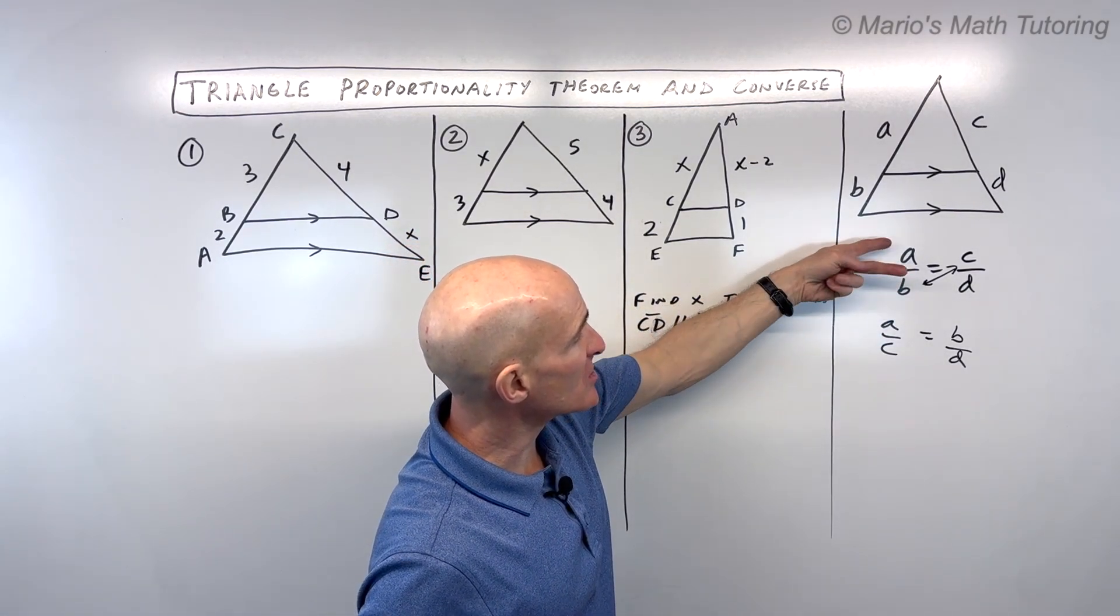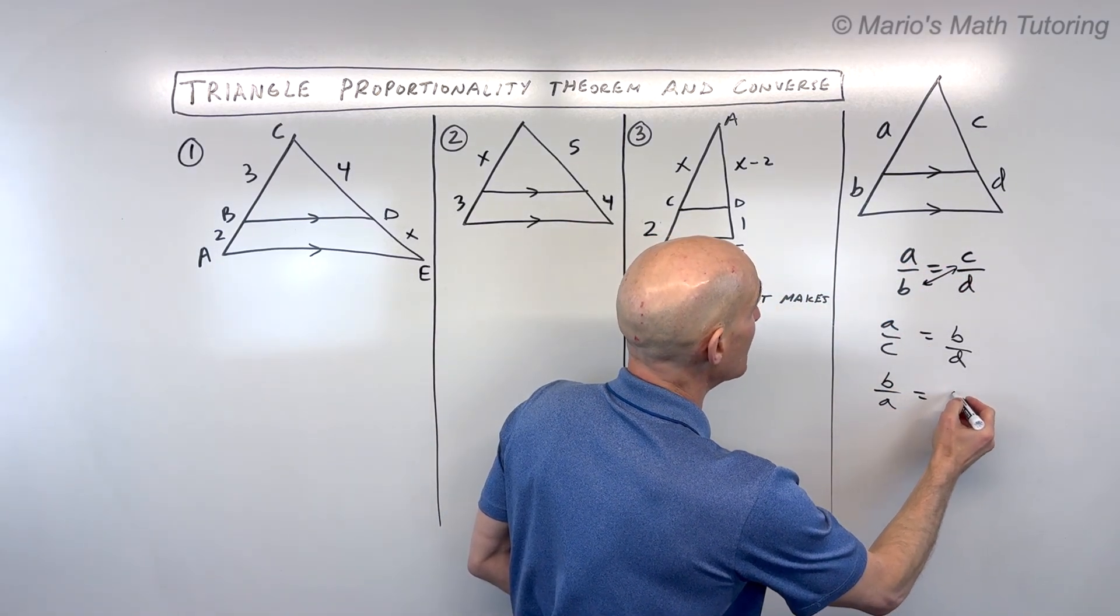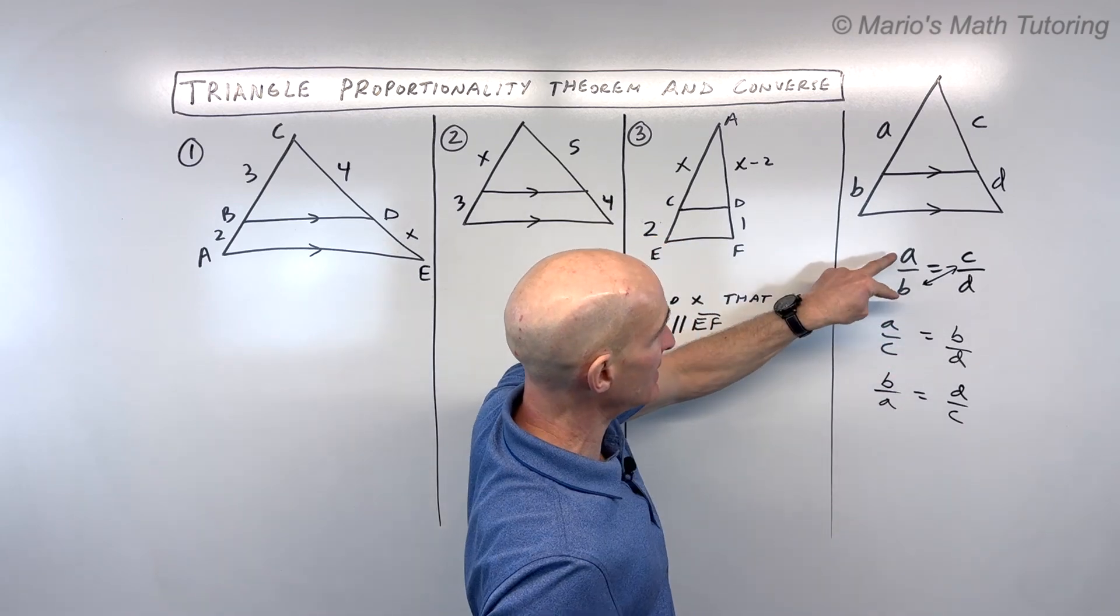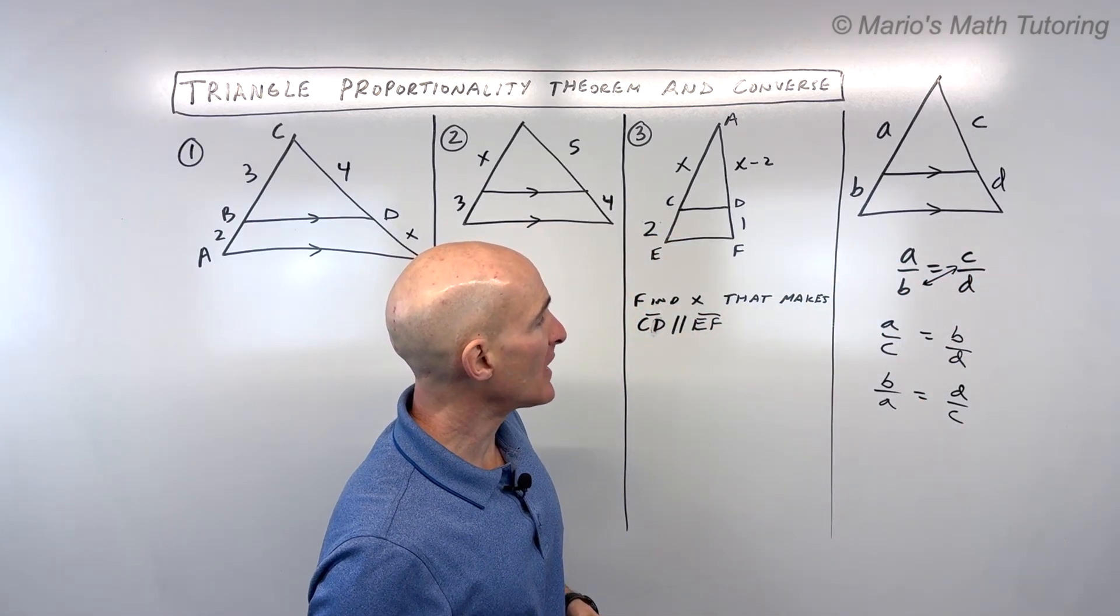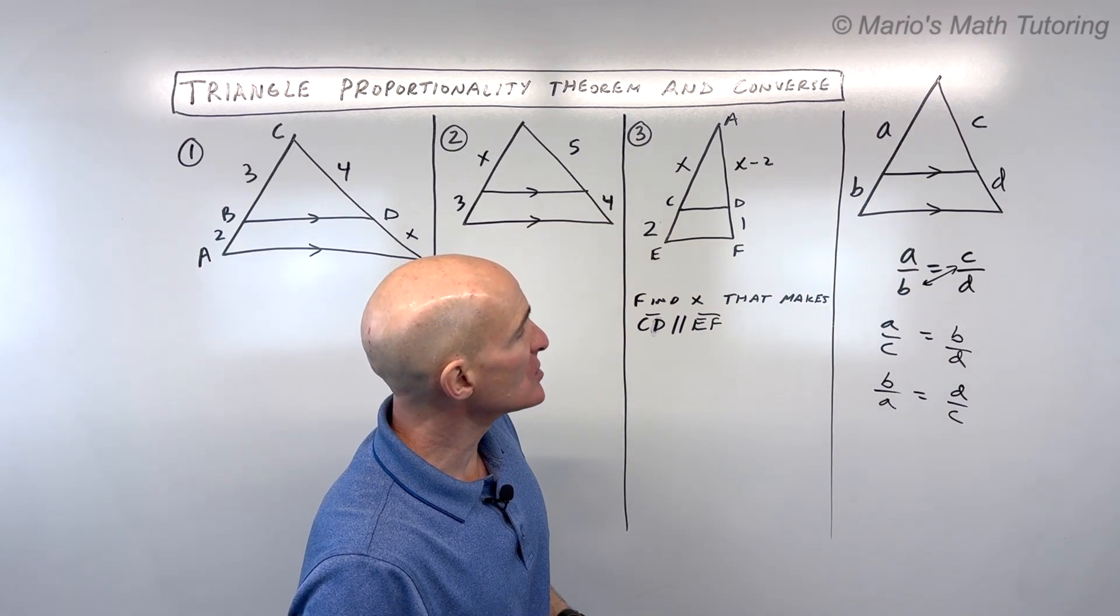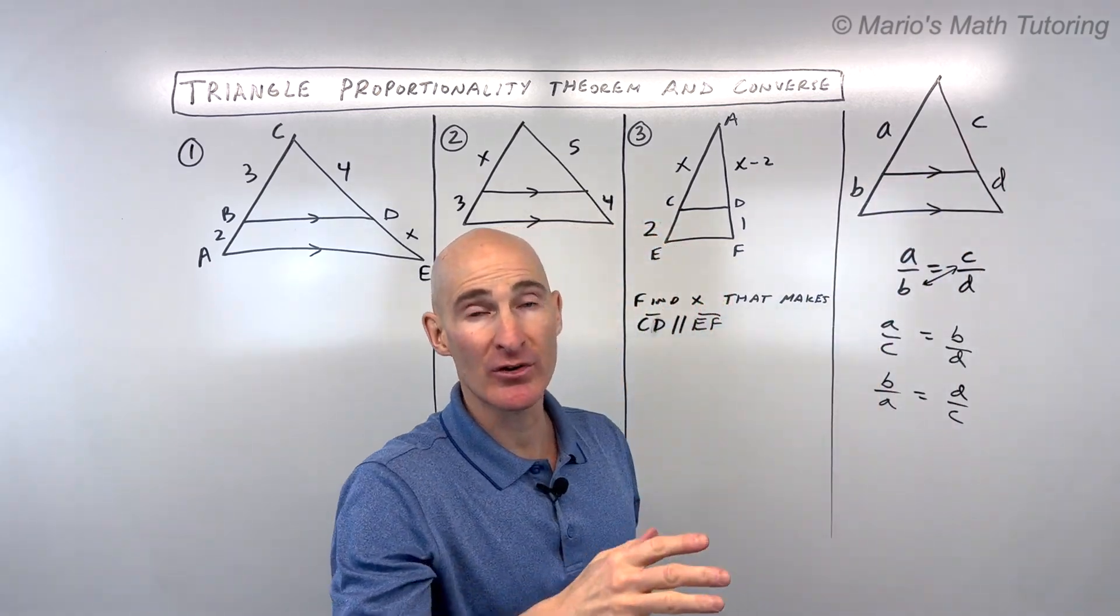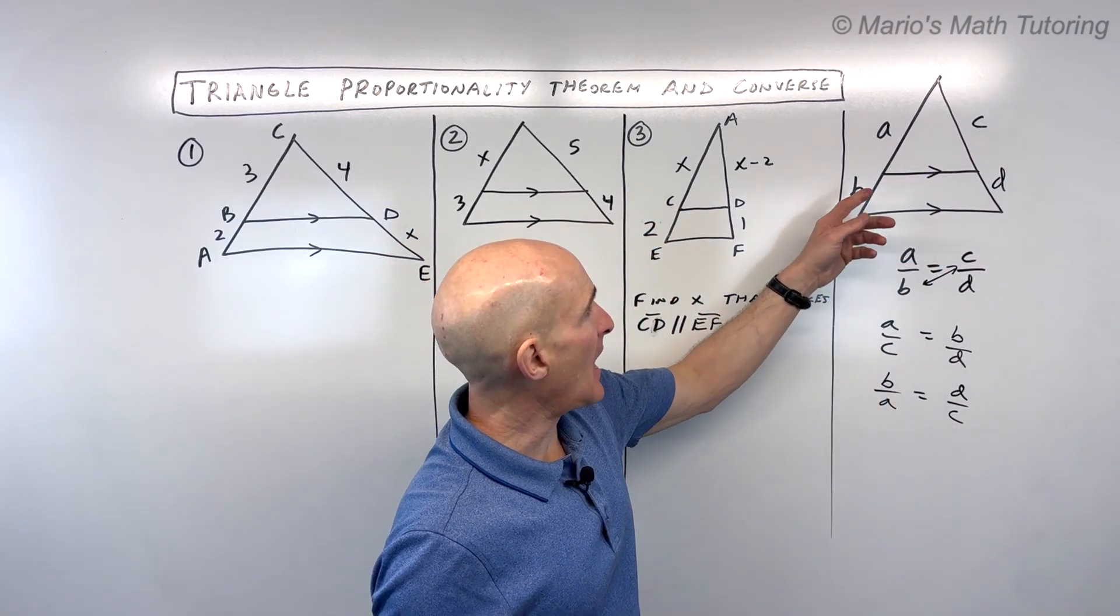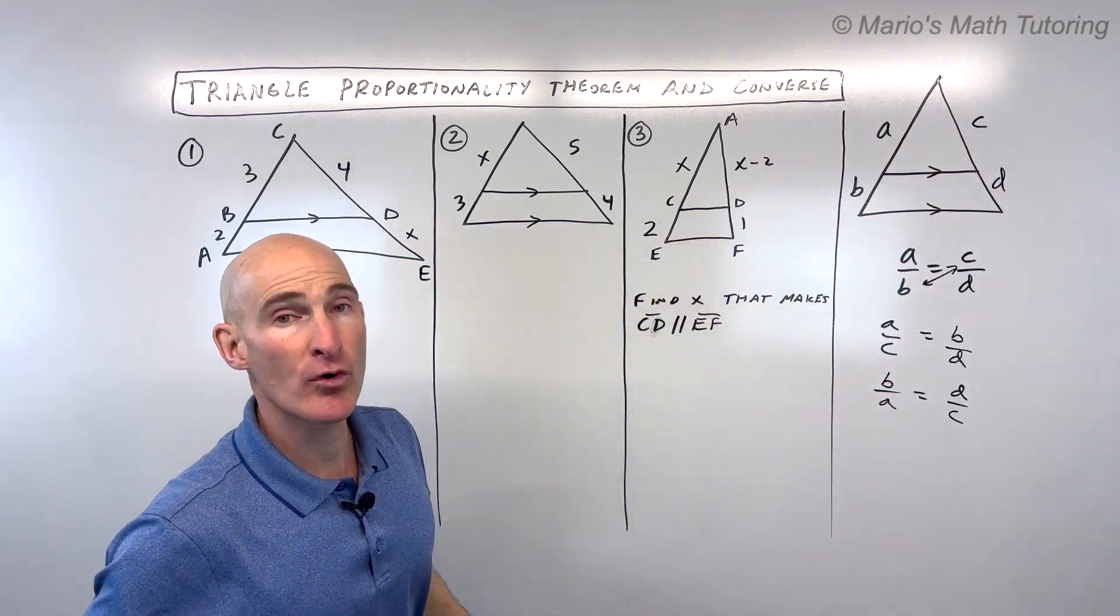The other thing you can do is take the reciprocal of both sides. So you could say the ratio of b to a is the same as d to c. All I did was flip both of these fractions over. So you can do this in different ways. What you don't want to do is something like a is to d as b is to c, where you're crisscrossing. But I like to just keep it simple: a is to b as c is to d, make a proportion, and solve.